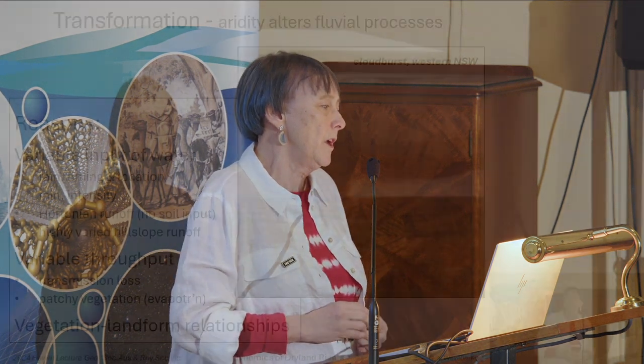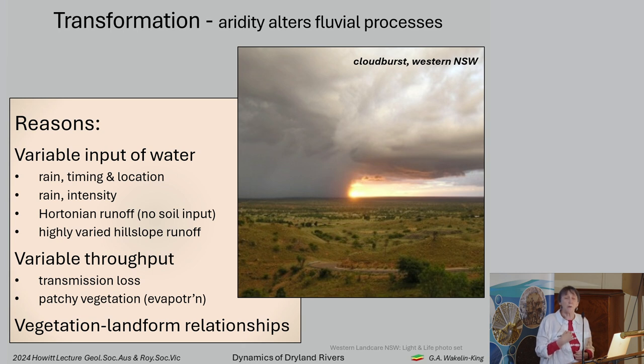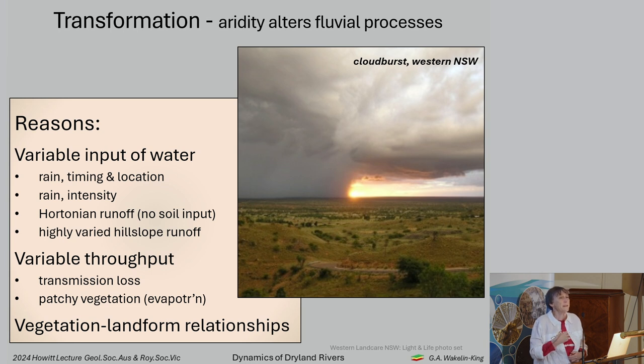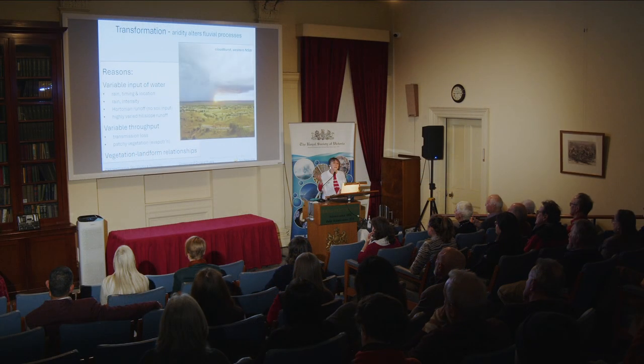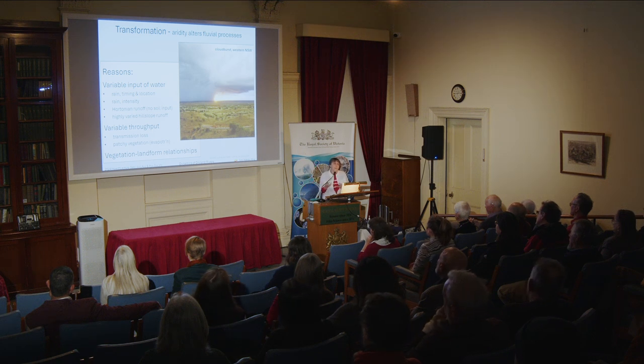The state of being in dry country changes some things that are really important to how rivers work. The timing, location, and intensity of rain are highly variable and uncertain. When rain falls on a hill slope, it is not, as in the temperate zone, sucked into the soil and mediated by soil processes. Instead it hits the ground and is shed by the surface, coming as surface runoff — Hortonian runoff.